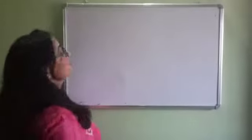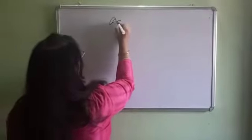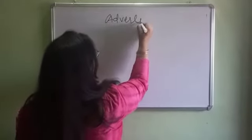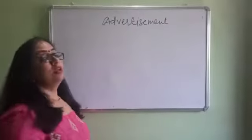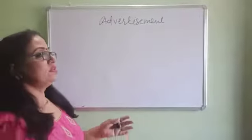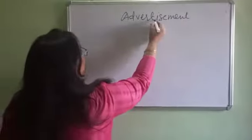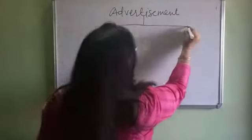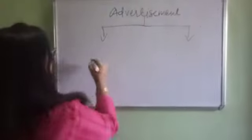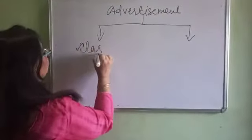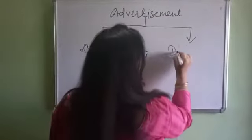In Class 12, yesterday we covered notices. Today we are going to do another part of short composition, that is advertisement. What is advertisement? Obviously it's clear from the name — advertising something. The advertisement you are going to do in your board exam is of two different kinds: one is classified and the other one is display advertisement.